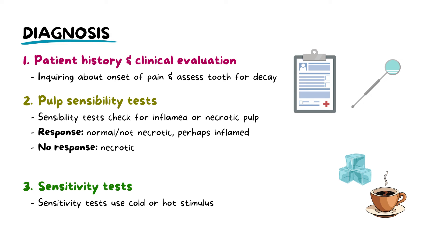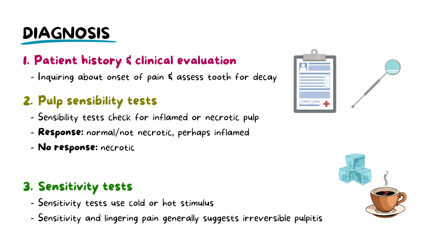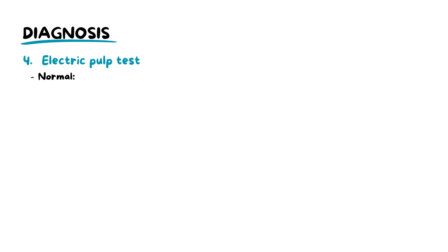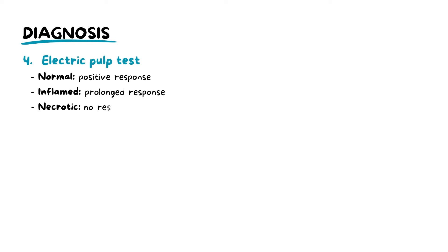In cold testing, a cold stimulus — basically a refrigerant spray or a cold stick — is applied to the tooth to observe its response. In warm testing, a warm gutta-percha cone or a heated instrument is used. Sensitivity to heat and lingering pain to thermal testing generally leans more towards the diagnosis of irreversible pulpitis. A normal tooth will experience a quick sharp pain that subsides immediately after removing the stimulus, while no response to temperature changes may indicate a necrotic pulp.